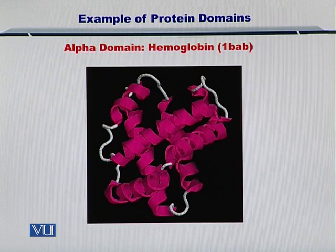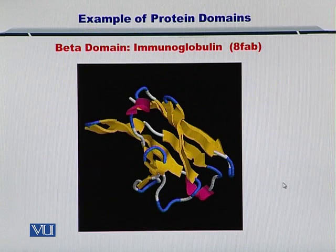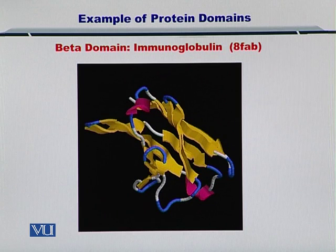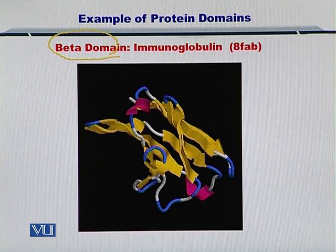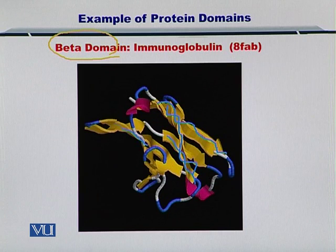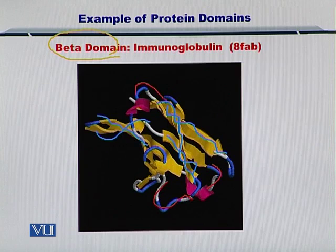After looking at hemoglobin, I'll show you immunoglobulin. This is a different protein compared to hemoglobin in that it is constituted by a beta domain. Here you can identify the beta sheets in yellow as shown, and these are linked up by the loops shown in red.